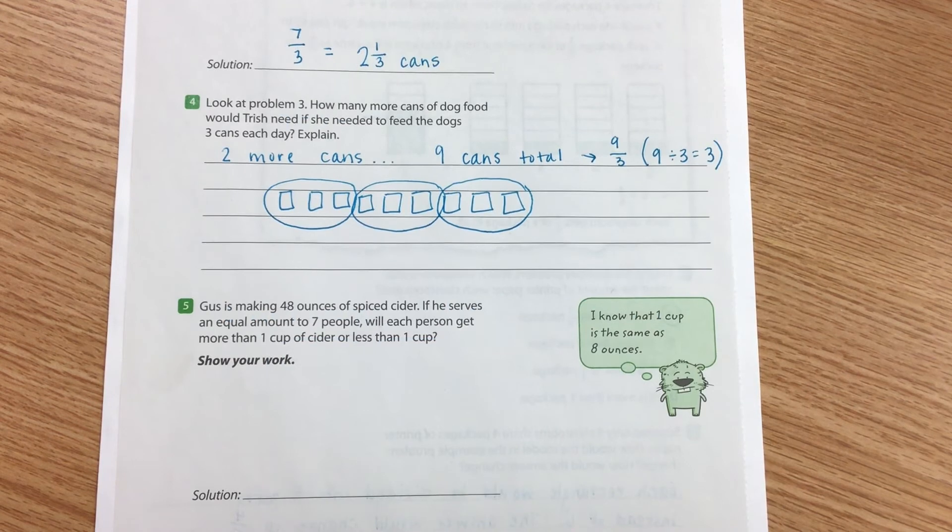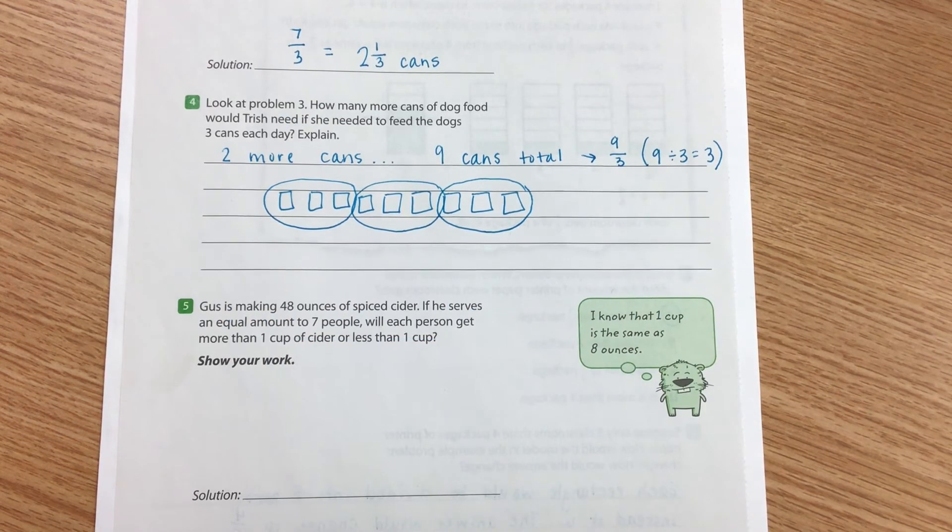And our last problem says, Gus is making 48 ounces of spiced cider. If he serves an equal amount to seven people, will each person get more than one cup of cider or less than one cup of cider?